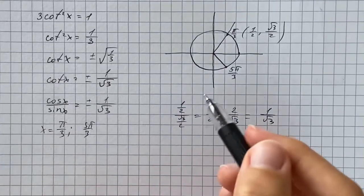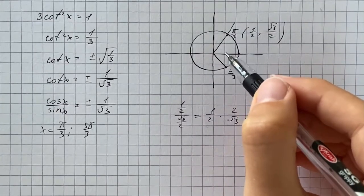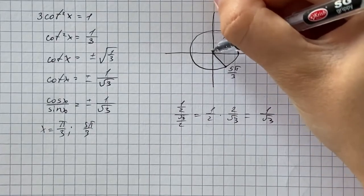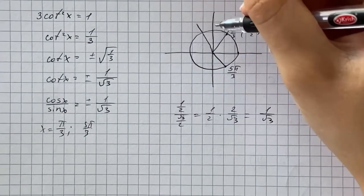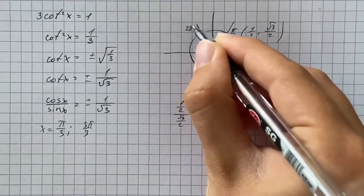Also, we're allowed to have negative solutions. So we're going to reflect this angle about the y-axis, and it's going to be 2 pi over 3.